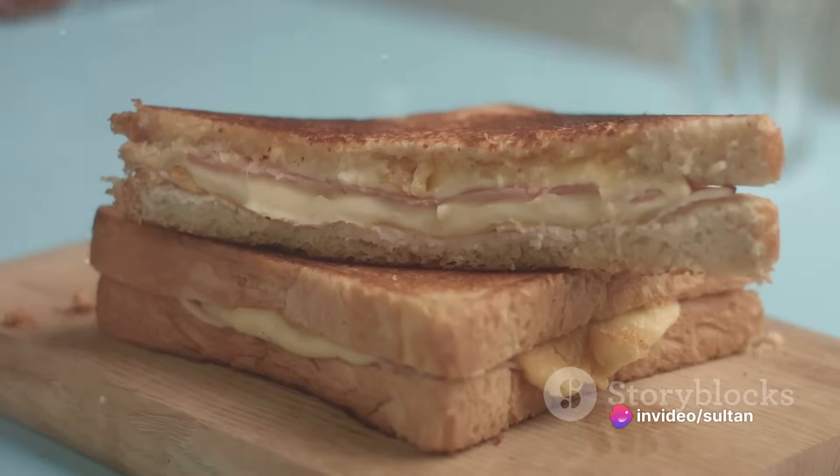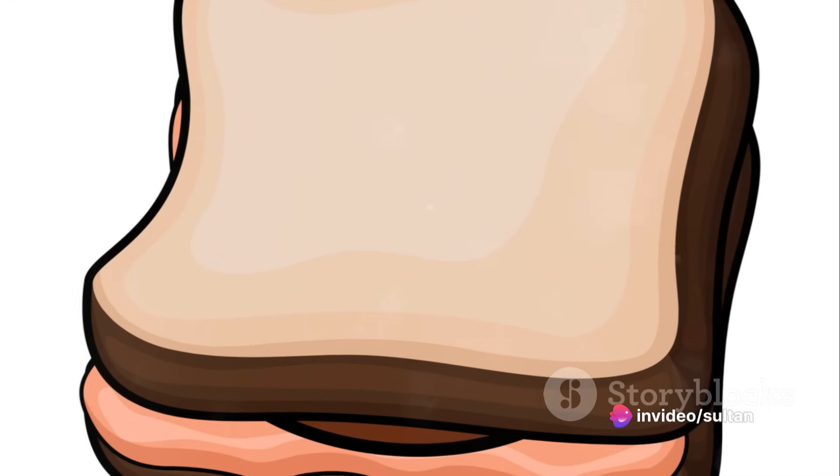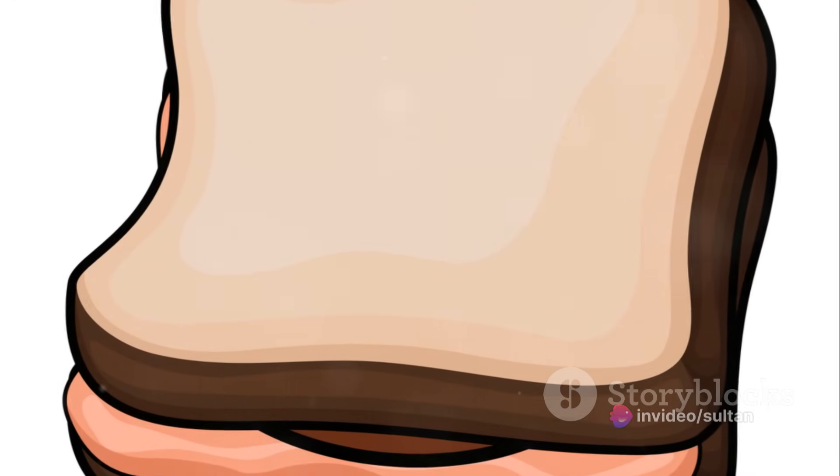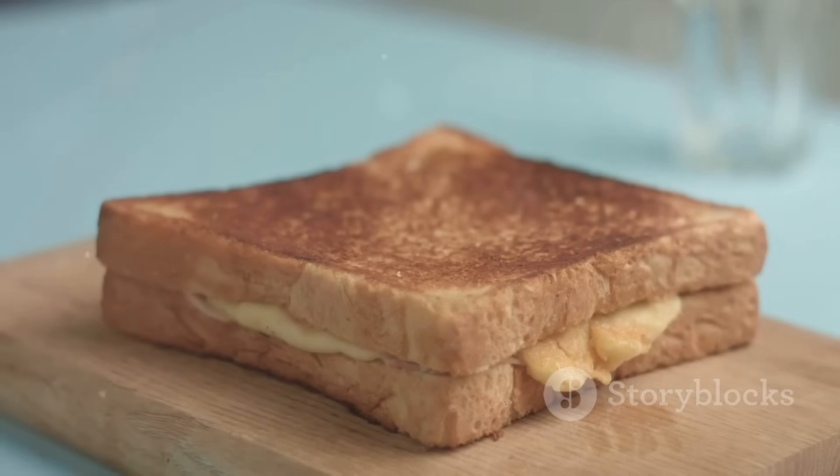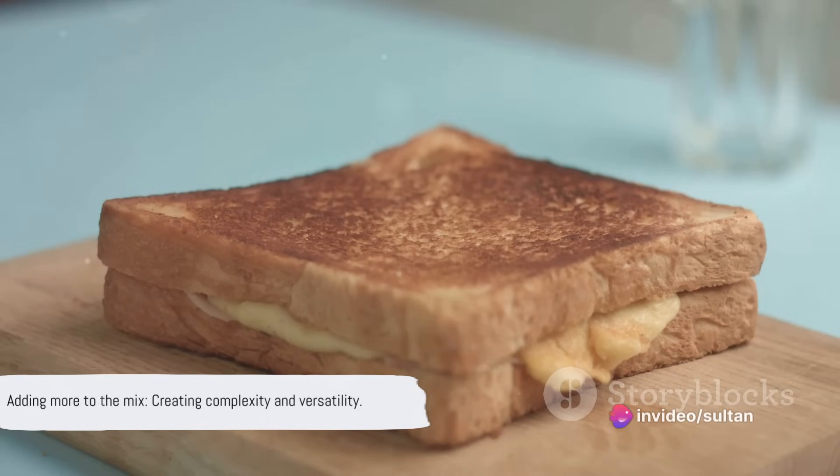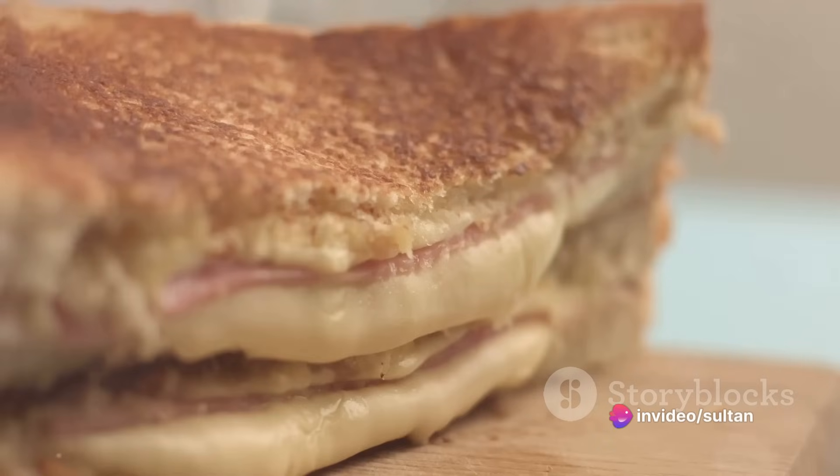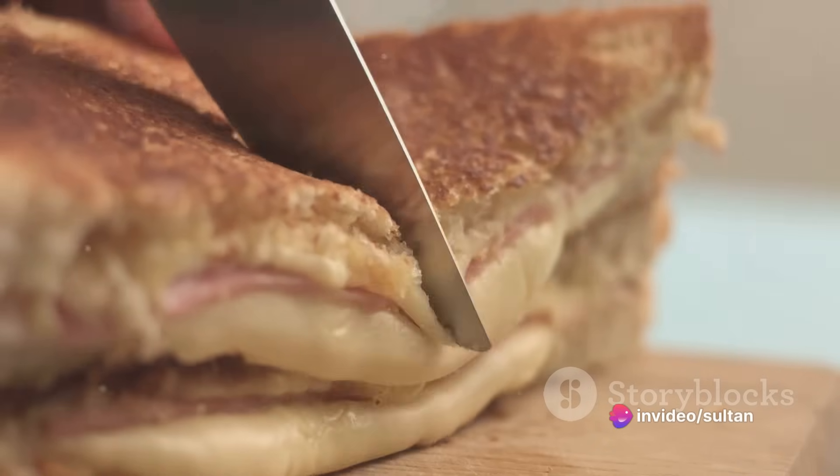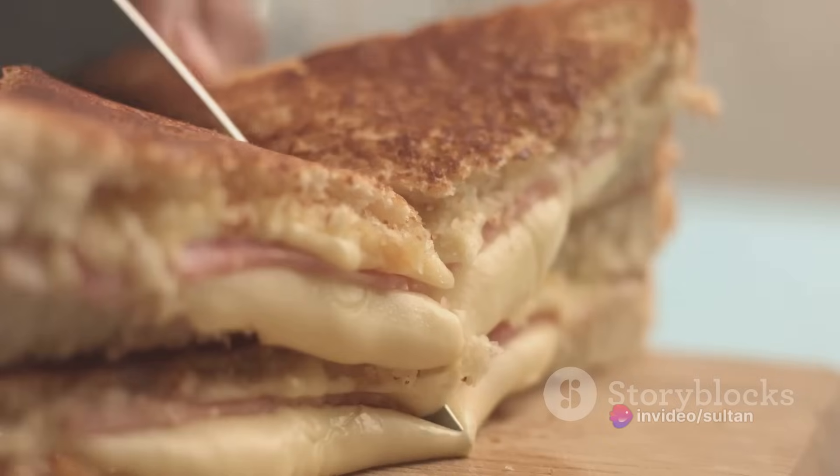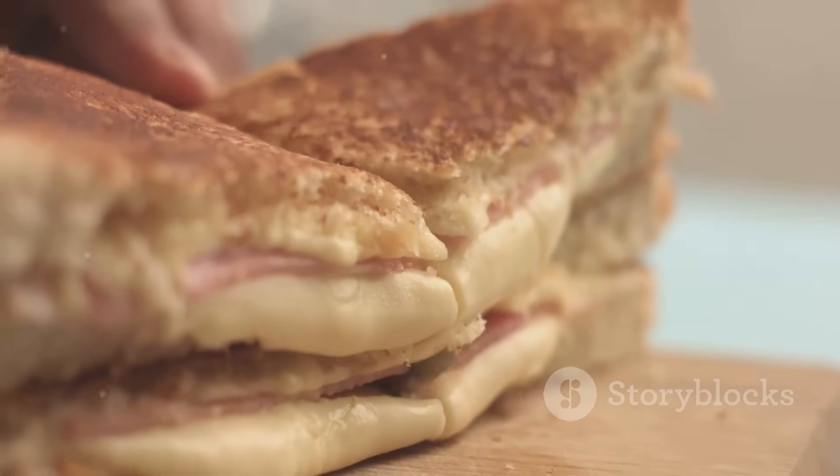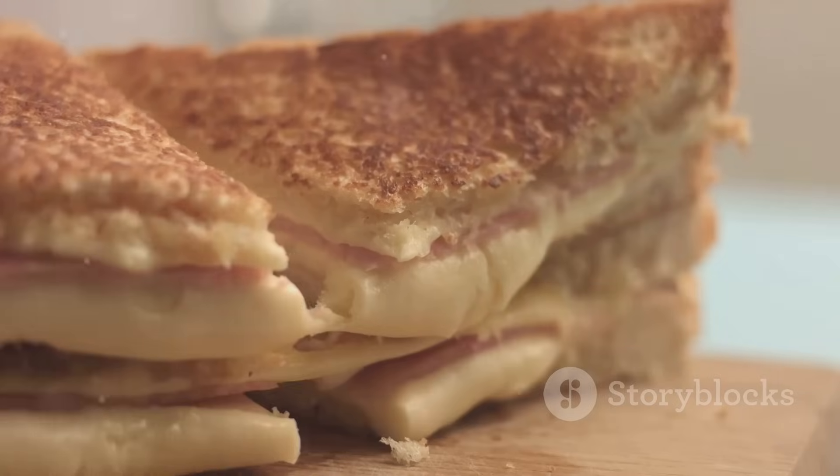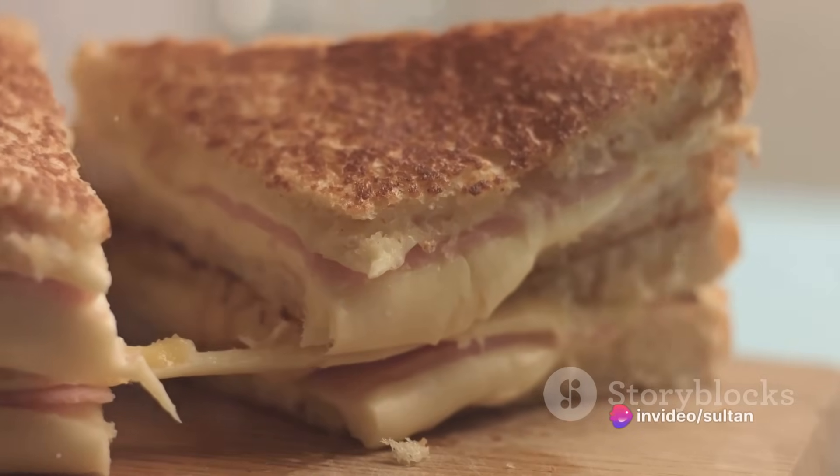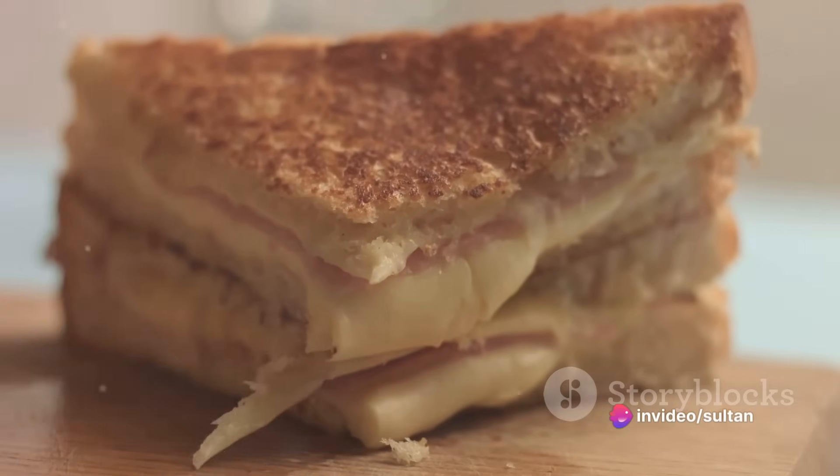And just as you can experiment with different sandwich fillings, chemists can use different types of monomers in addition reactions to create a vast array of plastics with different properties. So, whether it's preparing a hearty sandwich or synthesizing useful materials, the principle remains the same. We're adding more to the mix. And in the process, we're making something more complex, more versatile, and often more useful.